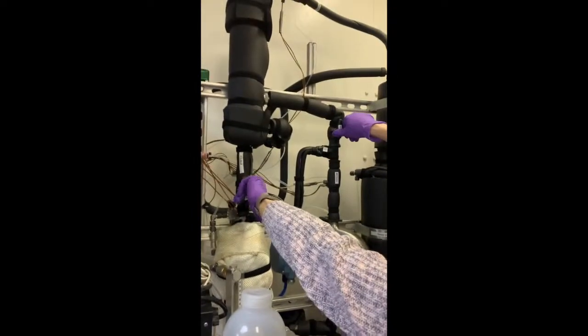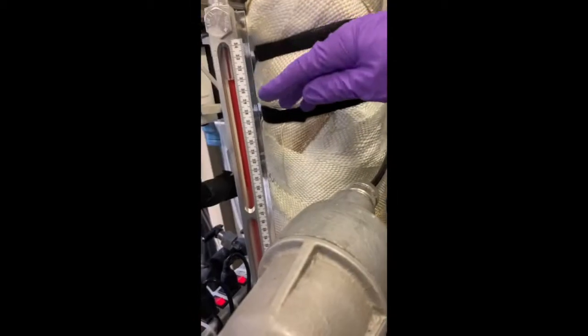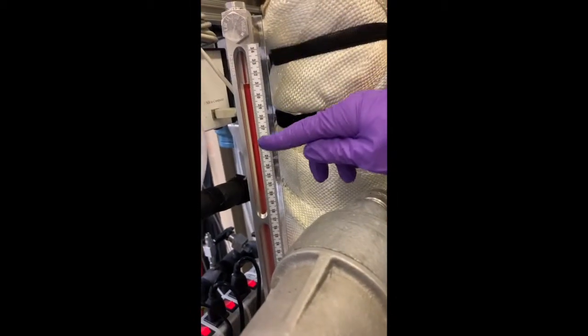Once the system reaches the desired temperature, the solution is fed to the membrane. The tank level is measured using the sight glass shown here, and separation begins.